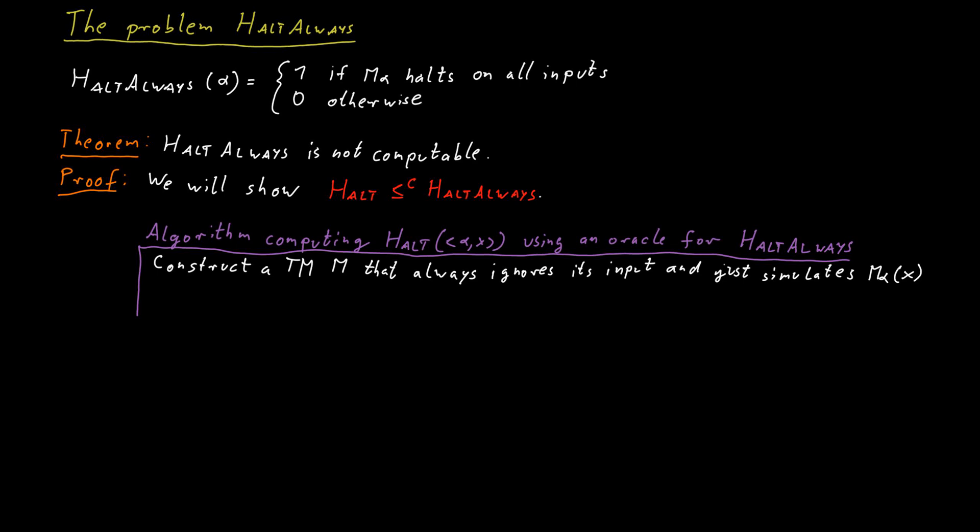It's important to note that we construct this machine M, but we don't intend to actually run that machine. We just build the machine, define what the transition function should be and so on, but we do not run that machine. Instead, we ask the Oracle whether that machine always halts.